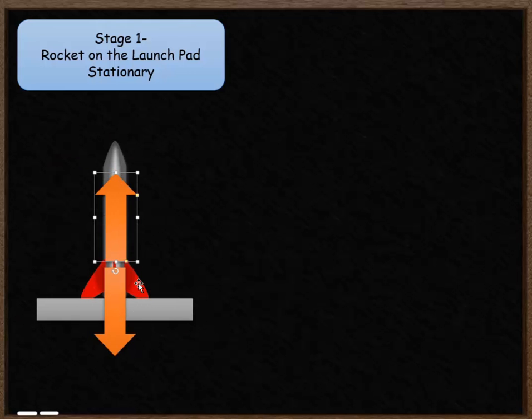So as the rocket pushes down onto the surface, the surface reacts and pushes the rocket back upwards with the same size force. Therefore the rocket doesn't move, it's completely stationary and still.